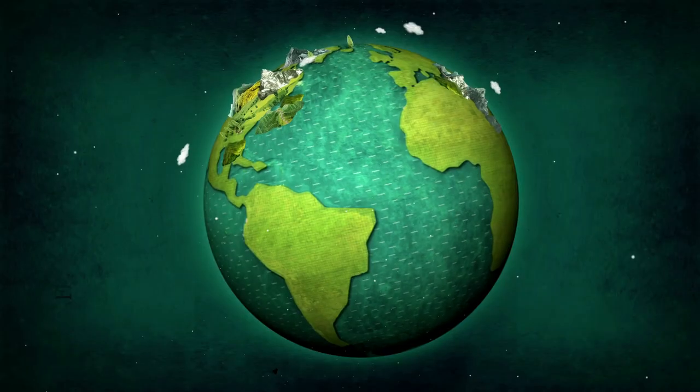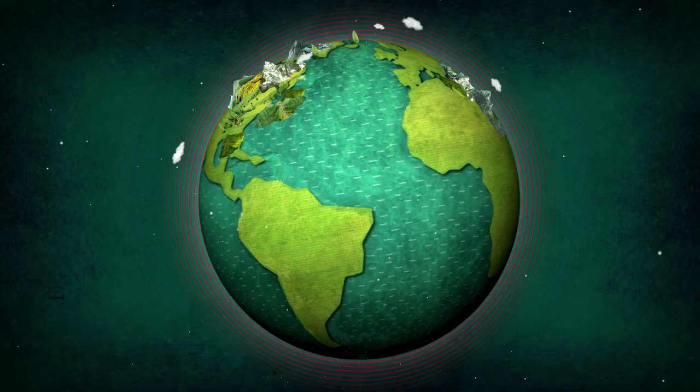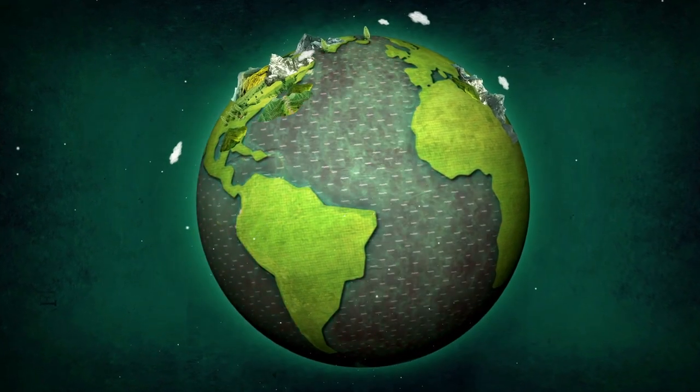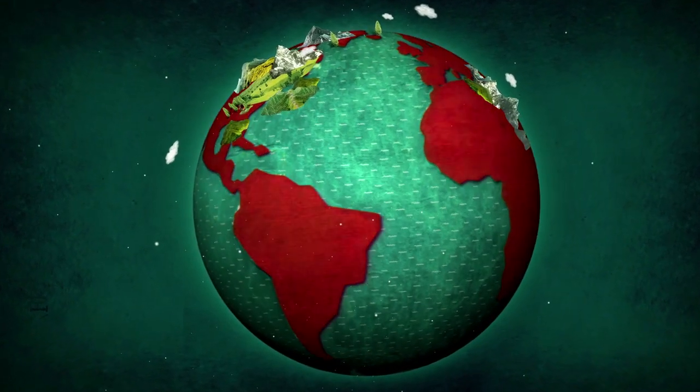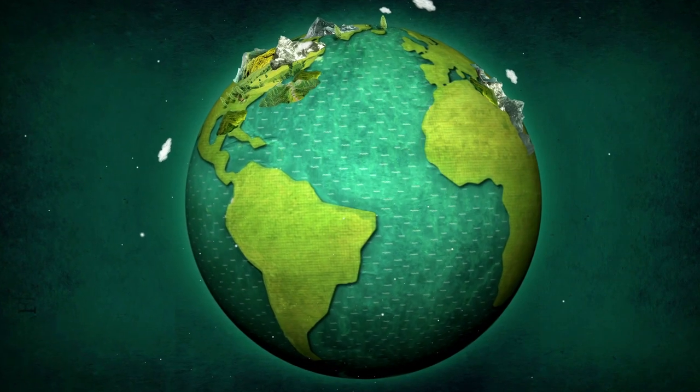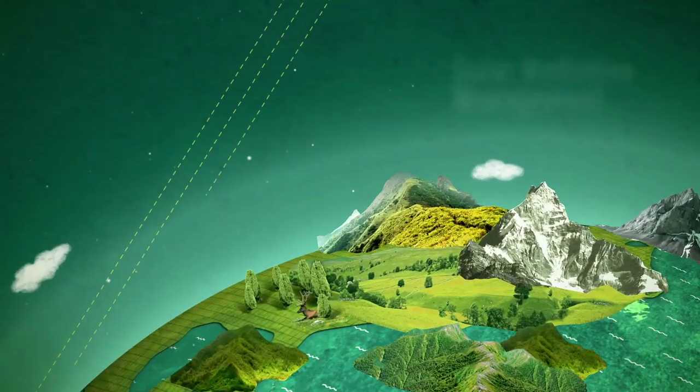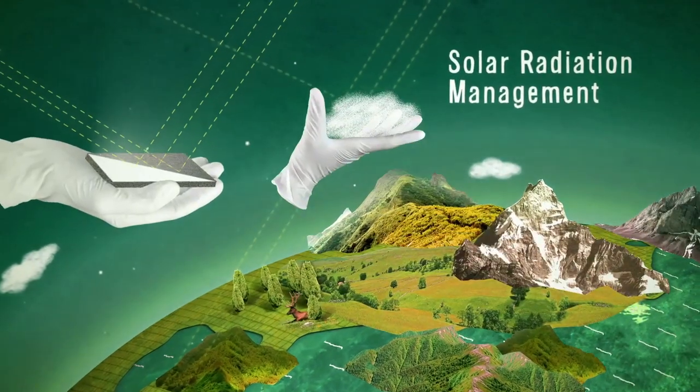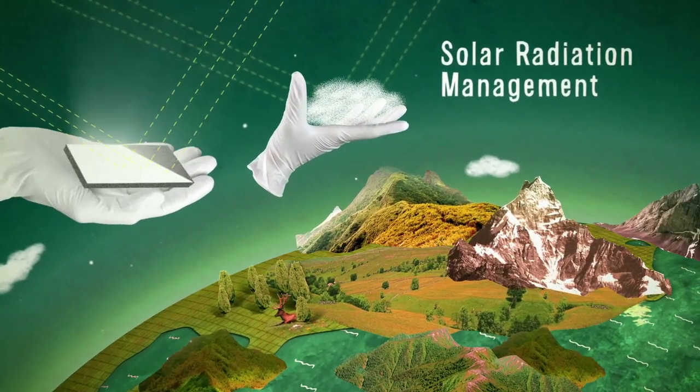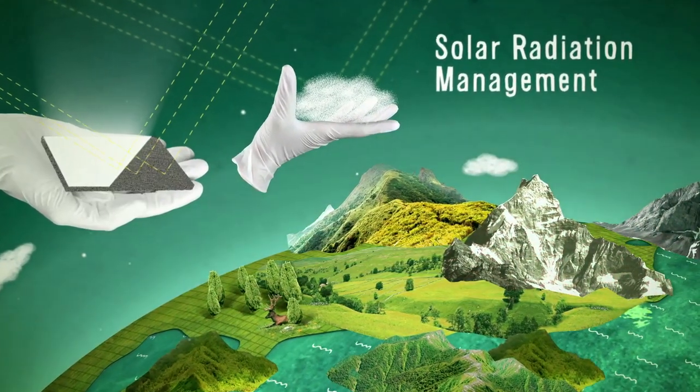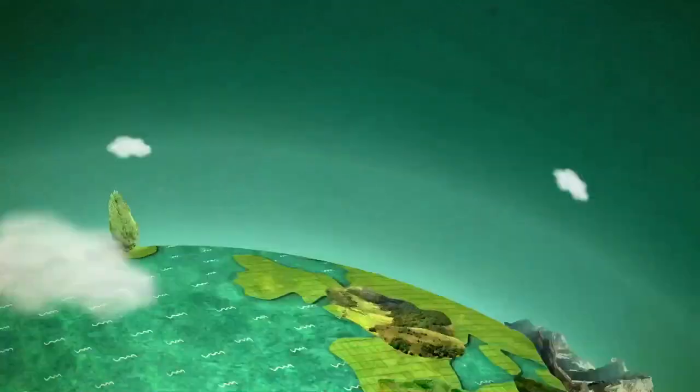Geoengineering is a term that covers large-scale, targeted interventions in the Earth's atmosphere, the oceans, and the biosphere. There are two basic directions that potential manipulation of the climate could take. Solar radiation management involves activities that reflect the sun's rays back into space, so that the climate heats up less.